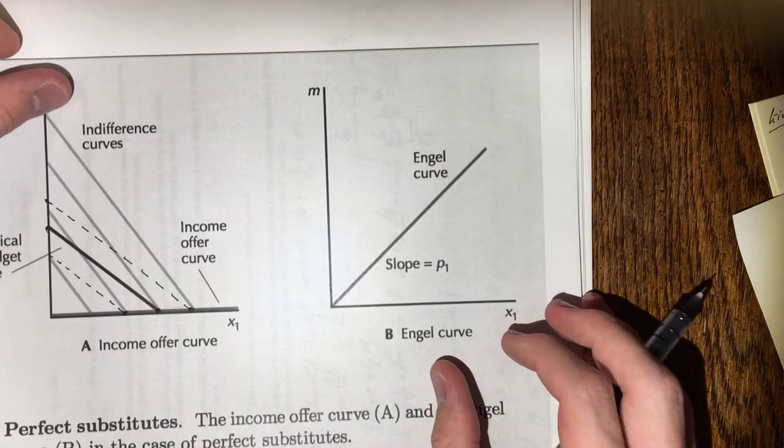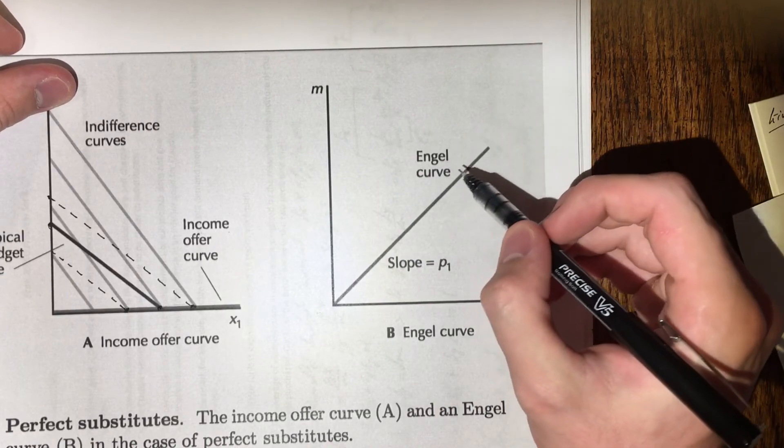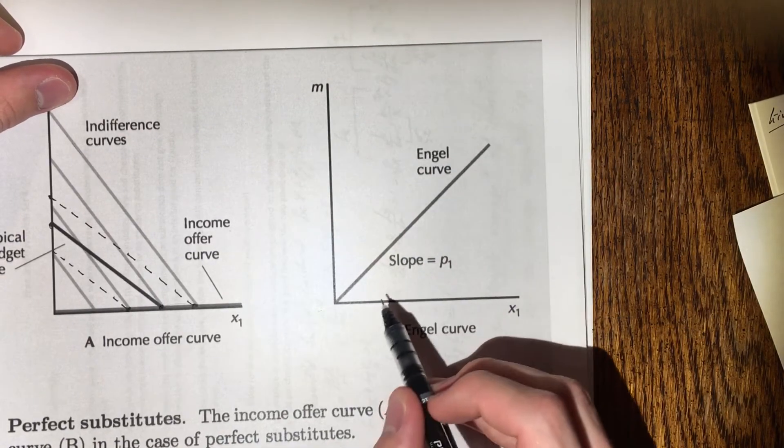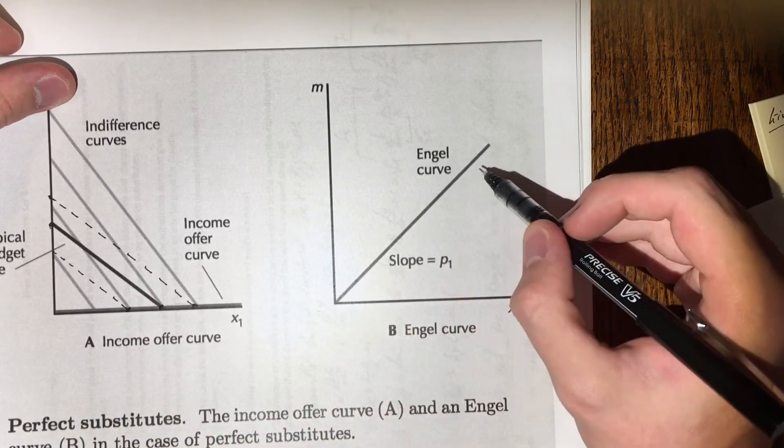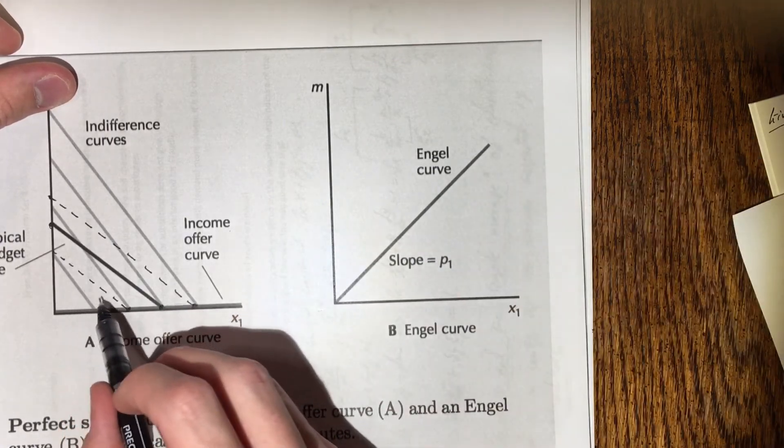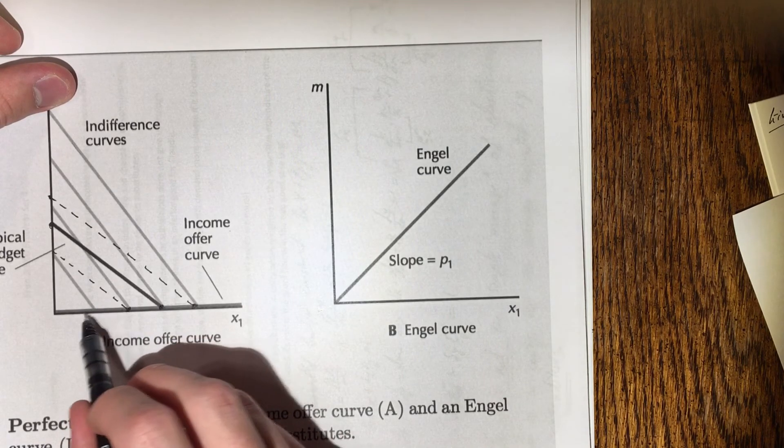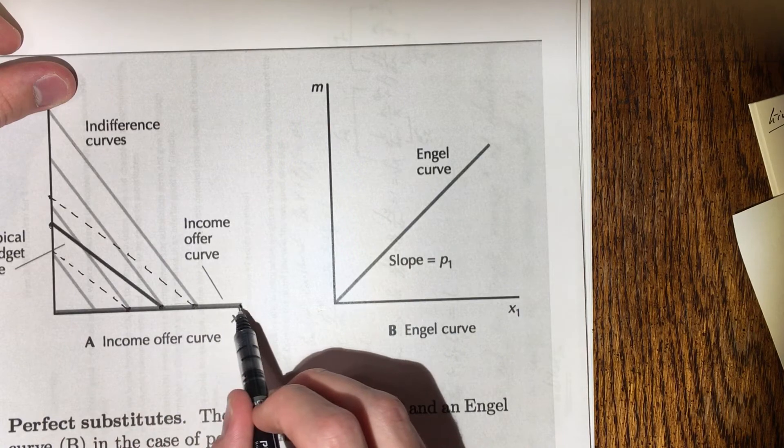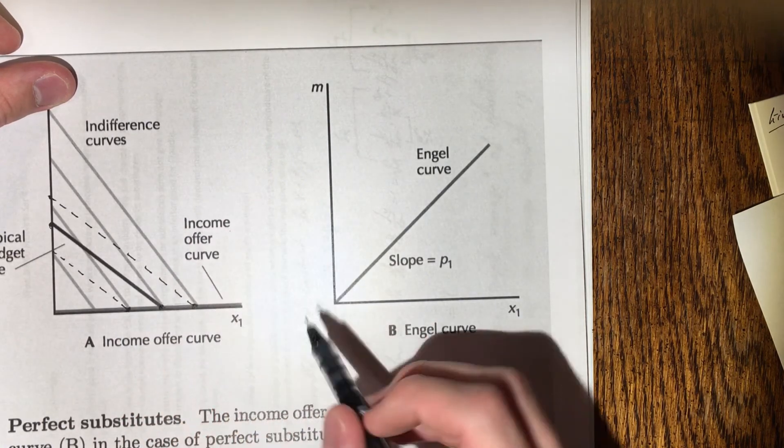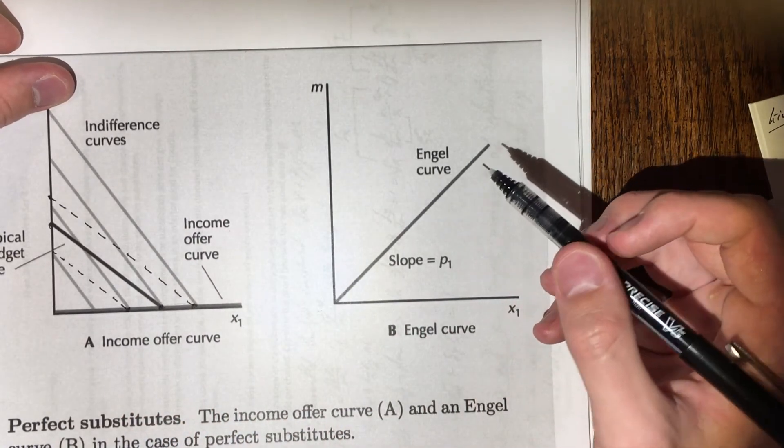Now the Engel curve is slightly different. Here we're measuring our consumption of good x as we are changing our income. So what are we seeing here? We're seeing that as we're increasing our income, we are increasing our consumption of x. That's what we see here on the income offer curve.